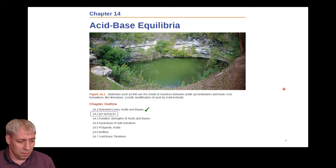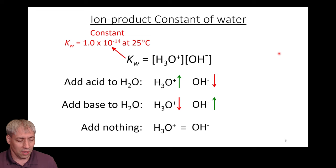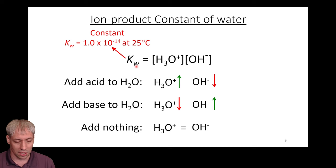Previously we defined Bronsted-Lowry acids and bases: Bronsted acids donate a proton, Bronsted bases accept a proton. We also introduced Kw, the equilibrium constant equal to the concentration of H3O⁺ times OH⁻. This Kw value is 1×10⁻¹⁴ at 25°C. Since Kw is fixed at that temperature, H3O⁺ and OH⁻ must be inversely related to each other.